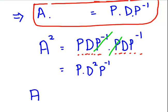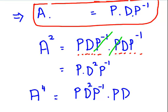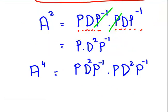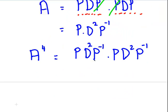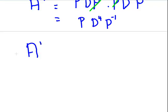Now suppose we're interested in A to the power of 4. We would square what we have — P times D-squared times P-inverse — and multiply it by A-squared again: P times D-squared times P-inverse. Again, P-inverse and P cancel out, leaving P times D to the power of 4 times P-inverse. So in general, A to the power of N can be written as P times D to the power of N times P-inverse.